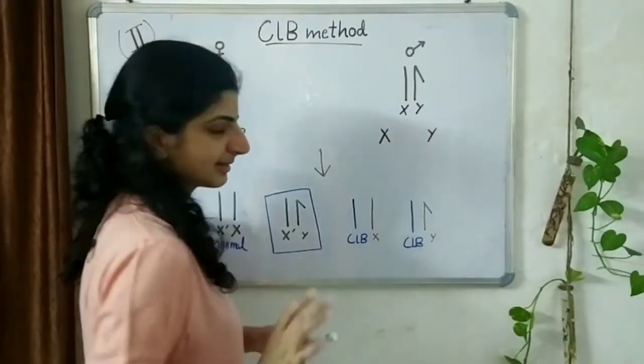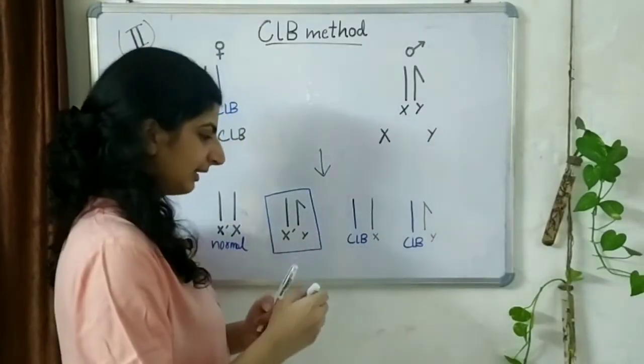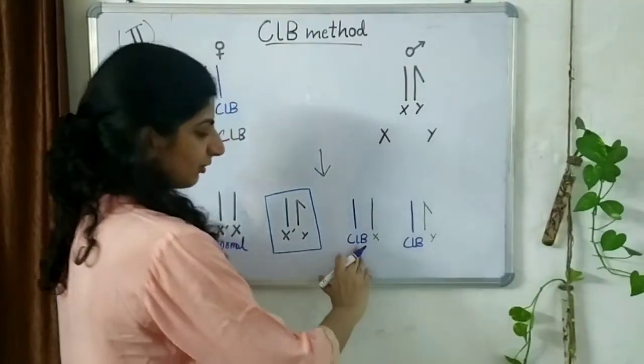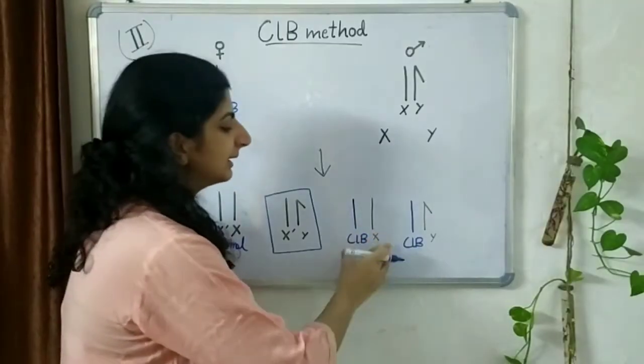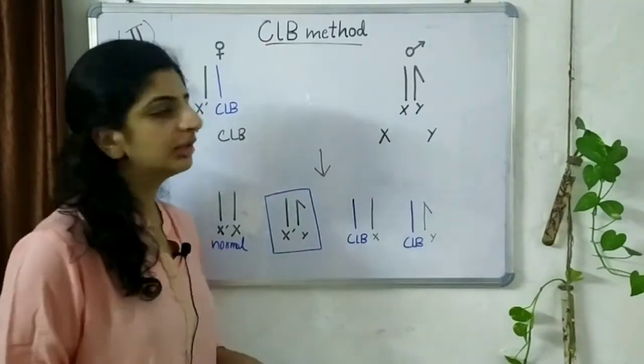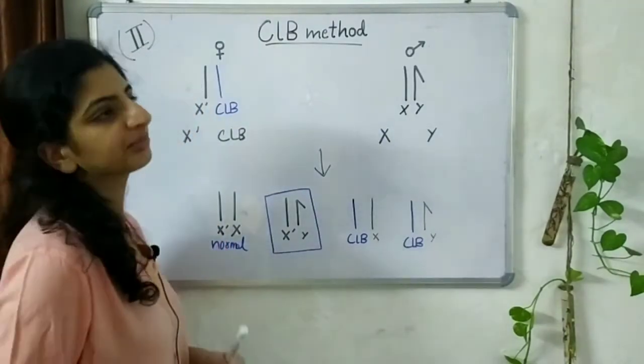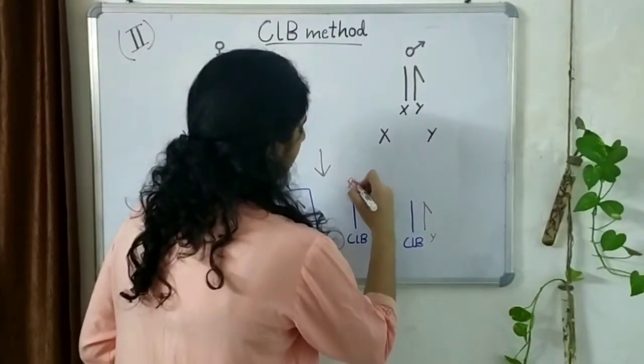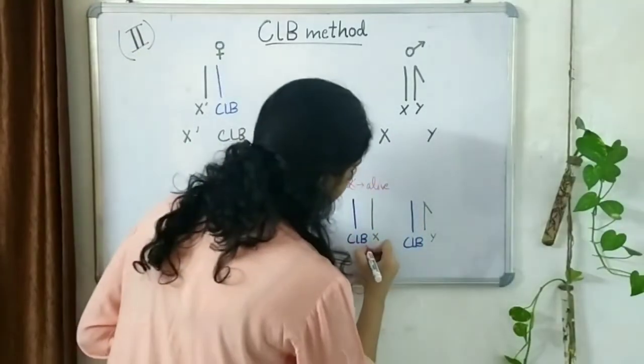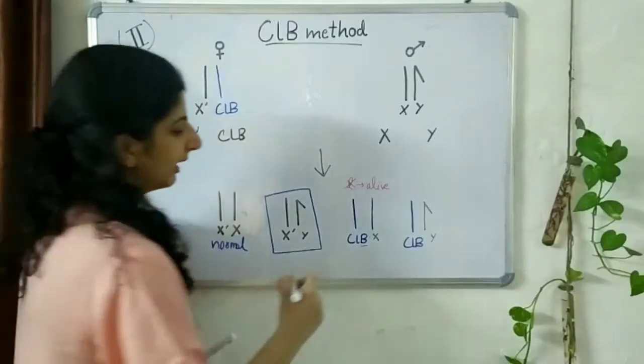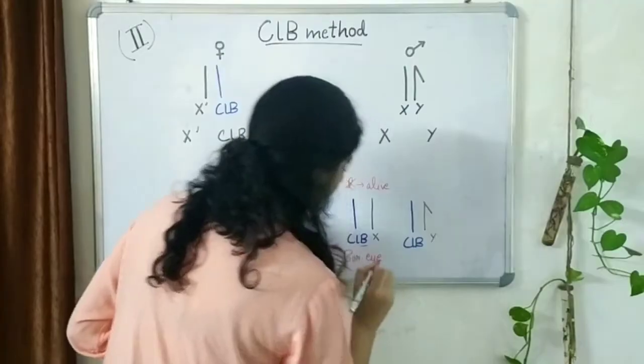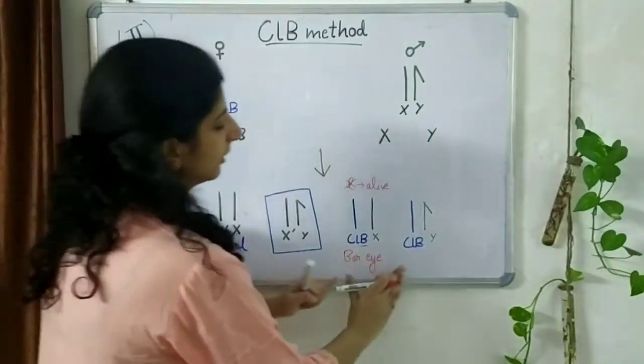Now, there is a CLB and an X. This CLB and the X will result in the presence of a lethal allele but as there is a heterozygous condition present here, as there is another X chromosome present here, this L will not be able to express itself. Therefore, our fly will stay alive. However, there is a dominant bar eye gene present and it will result in the bar eye phenotype. So, we can differentiate this from this fly.